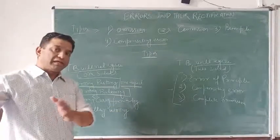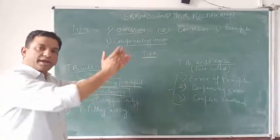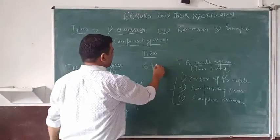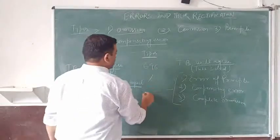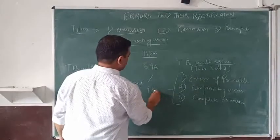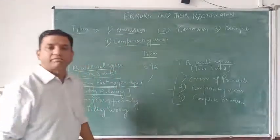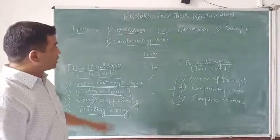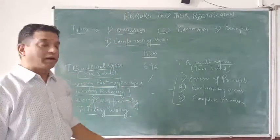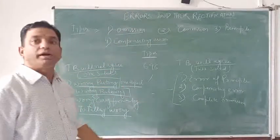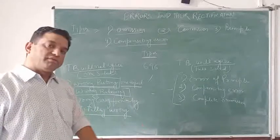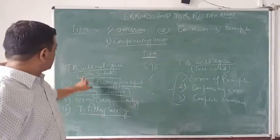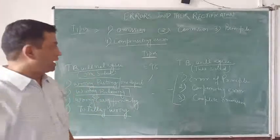Wrong carry forwarding — the balance of the previous year is carried to the next year. If you have committed any mistake, like the previous year's balance was 696 but by mistake you have taken it as 969, then the trial balance will not agree. And lastly, wrong totaling — if by mistake the total of the ledger is calculated wrongly, then the balancing will be wrong, and the next year's opening balance will also be wrong. Because of these errors, the trial balance will not agree.